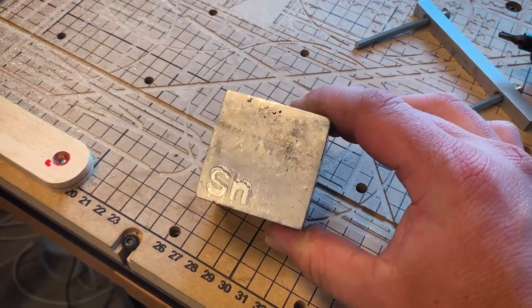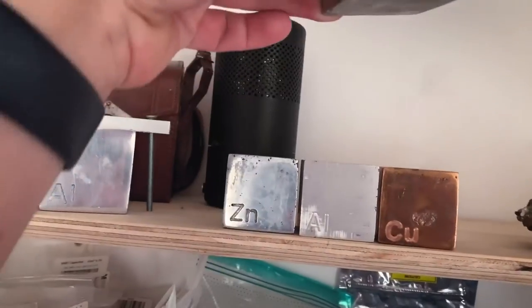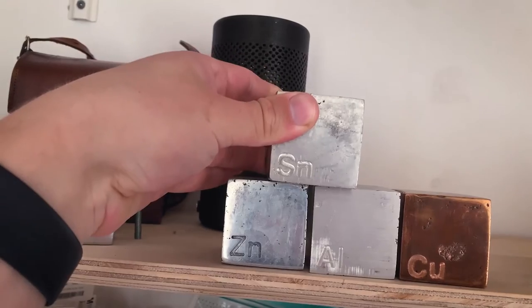Tin can now be added to my collection of elements and metal cubes, already consisting of copper, zinc, and aluminum.